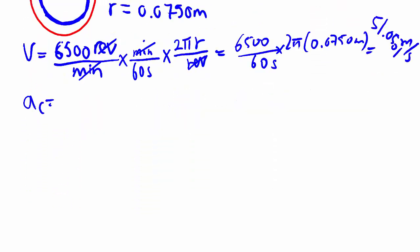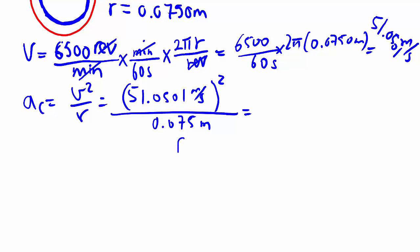With that, we plug it into v squared over r, all squared over 0.075 meters. And just to double check the units, we have meters squared, seconds squared on top, divided by meters.